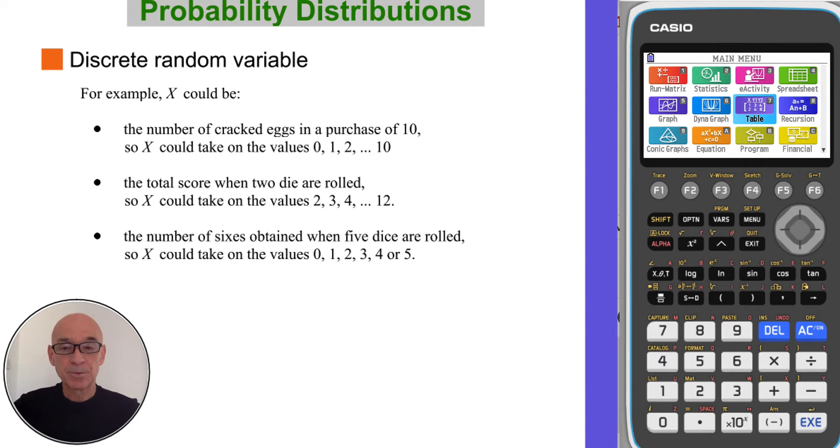Other examples of discrete random variables are, for example, the number of cracked eggs in a purchase of 10. So X could then take on the values 0 through 10. Or X could be the score when 2 die are rolled. X could take on the values from 2 to 12. Or the number of 6's obtained when 5 dice are rolled. So X could take on the values of 0 through 5.